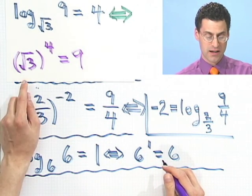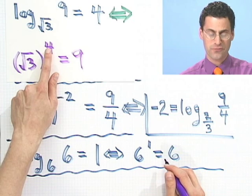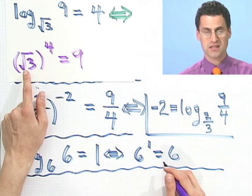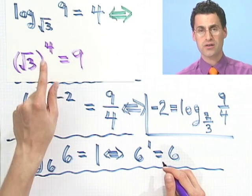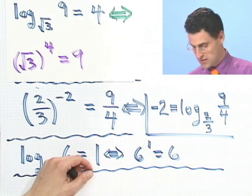Is that true? Well, let's think about it. The square root of 3 to the 4th is the same thing as the square root of 3 squared squared, because to the 4th is just squared squared.